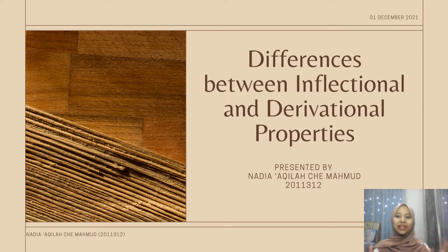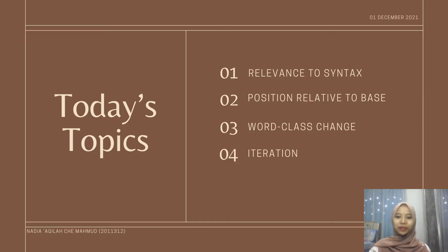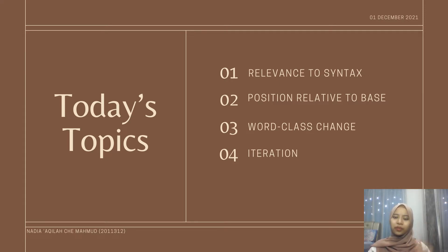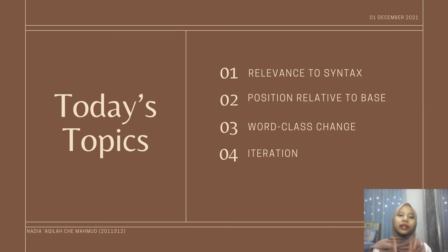So, we will learn about the differences between inflectional and derivational properties, which are: first, relevance to syntax; second, position relative to base; third, word class change; and fourth, iteration. We need to know the differences to tell people and also to acknowledge that there are differences between inflectional and derivational morphemes.